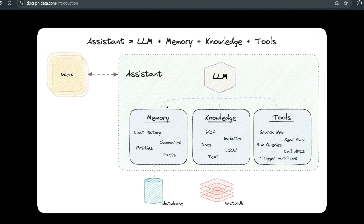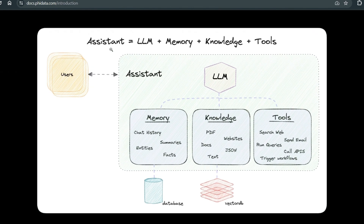An assistant is simply a combination of components: a raw LLM plus memory plus knowledge plus tools. When an LLM is powered with memory, you can implement chat history, summaries, entities, and facts, and store that in a database. LLMs can be improved with a knowledge base — for example, PDFs, websites, docs, JSON, and text — which you can put into a vector database.